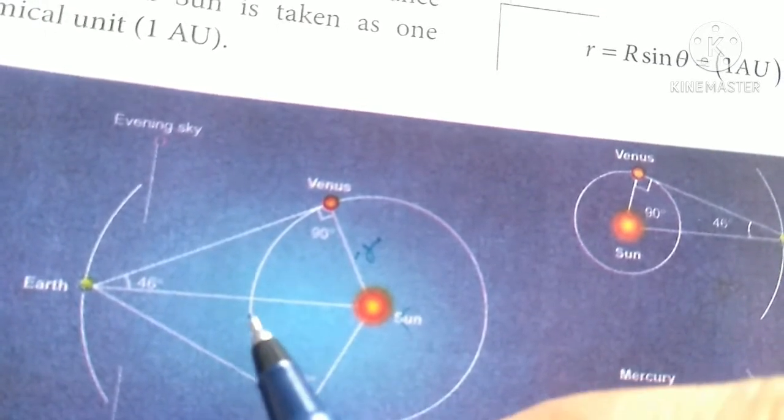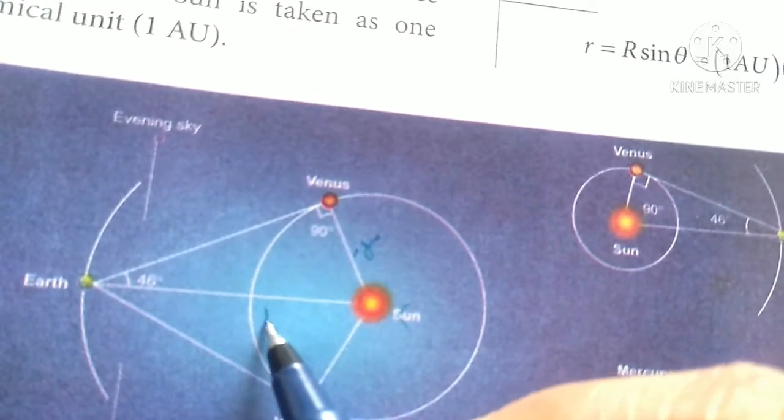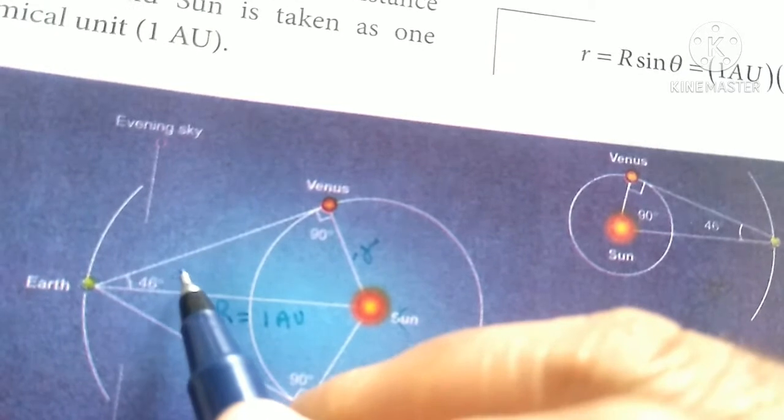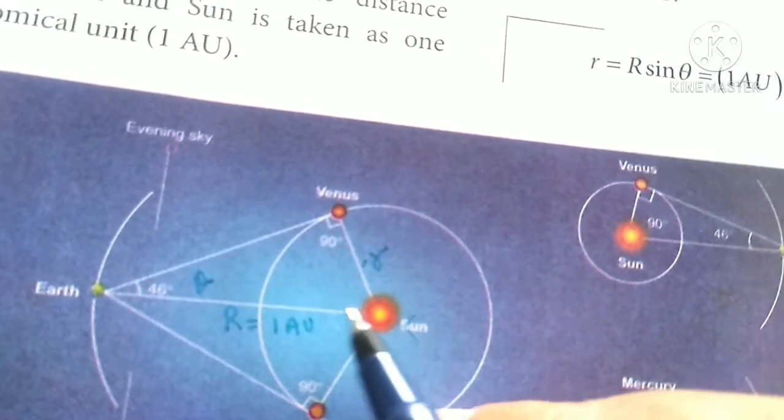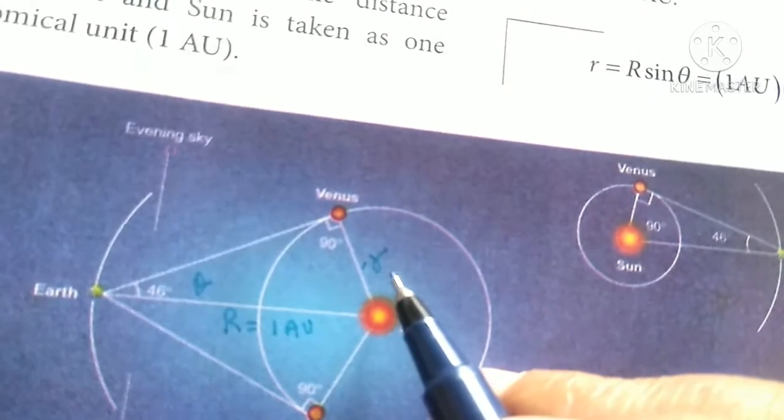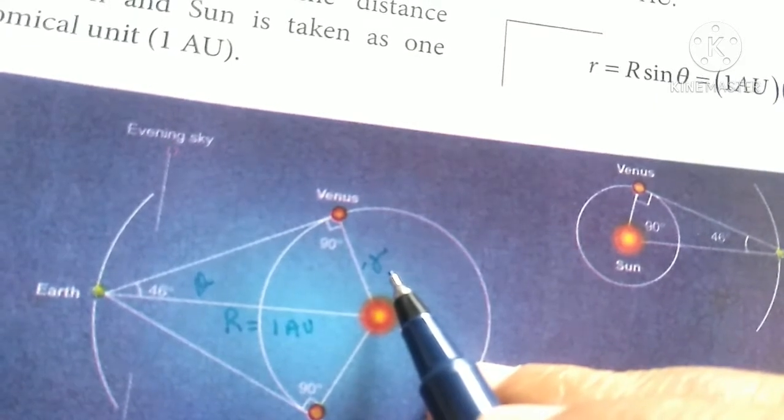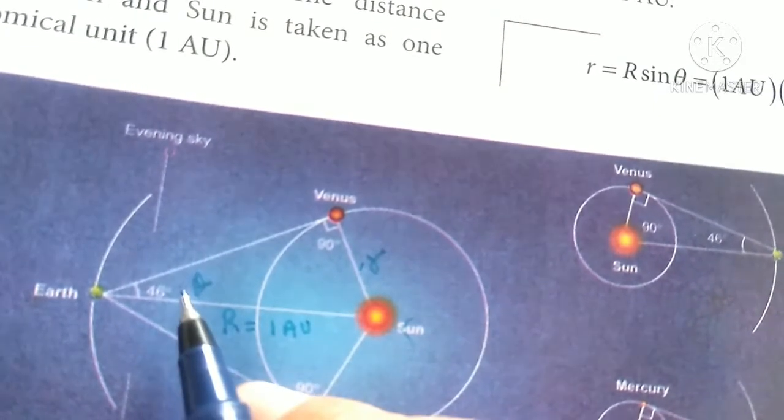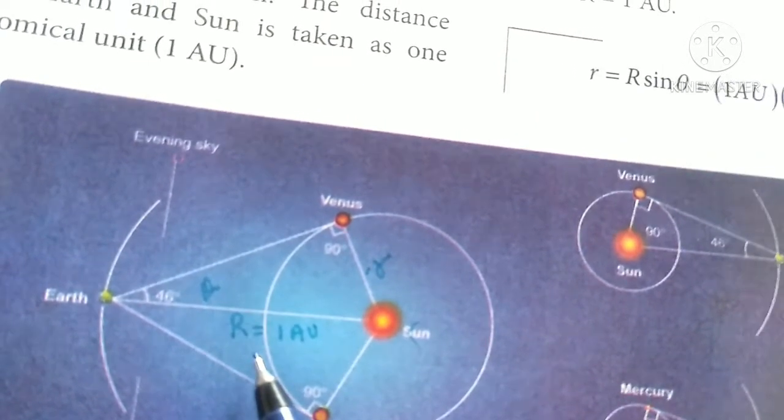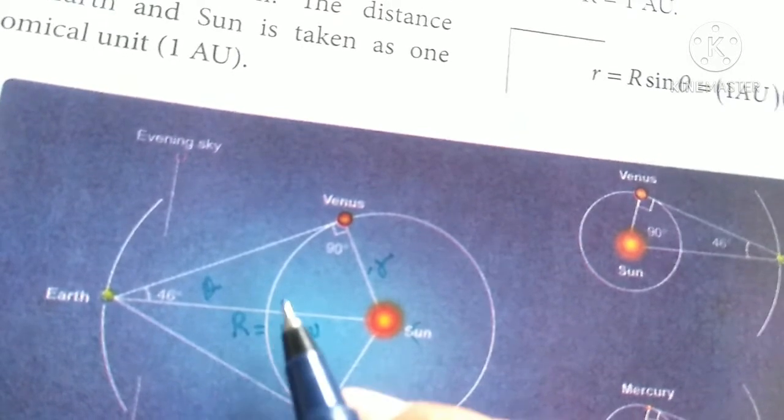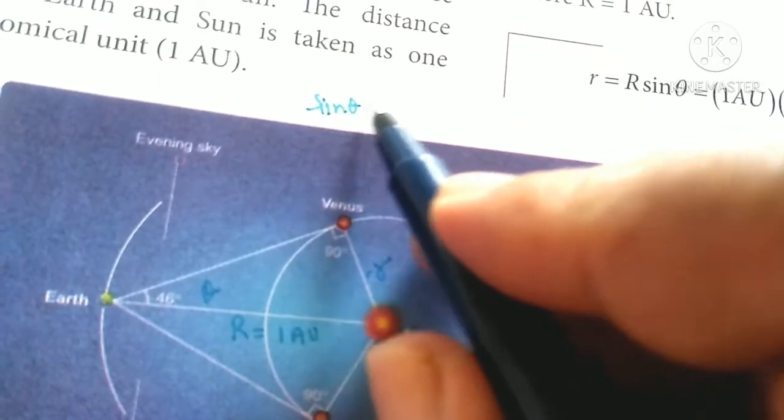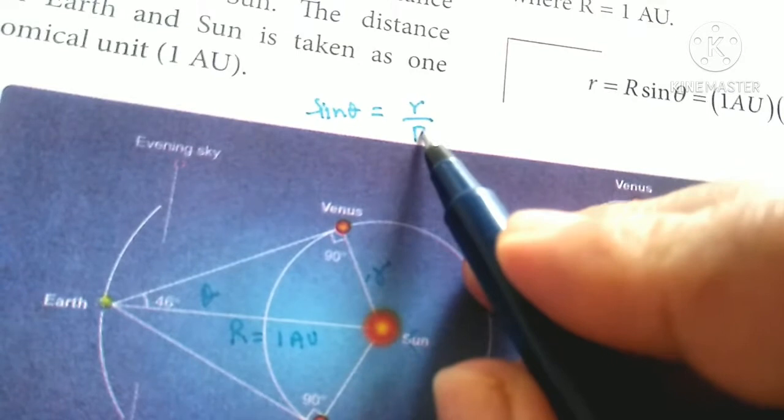Earth to sun distance is one astronomical unit. In this diagram, R is one AU, theta is 46 degrees. Then we have a circle with small r. The theta is the opposite side. Sin theta is the opposite side by hypotenuse.